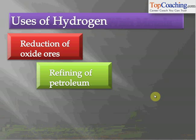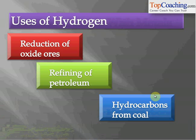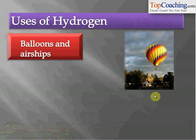Another use of hydrogen is in the refining of petroleum. Hydrogen is also used to form hydrocarbons from coal. Hydrocarbons are compounds consisting only of carbon and hydrogen, so hydrogen is essential in synthesizing many hydrocarbons. Hydrogen is sometimes also used in balloons and airships because of its very low density.